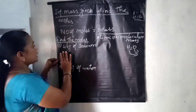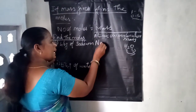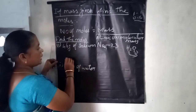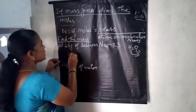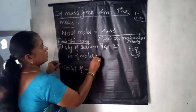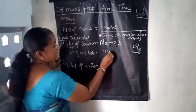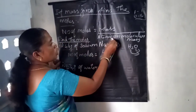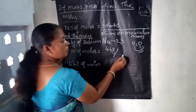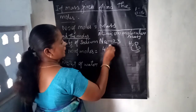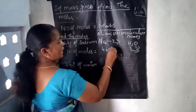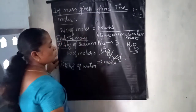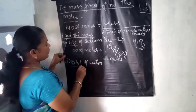First sum: find the moles for 46 grams of sodium. Sodium's symbol is Na, and its atomic mass is 23 grams. Number of moles = mass ÷ atomic mass = 46 g ÷ 23 g = 2 moles. Since sodium is an atom, use atomic mass, not molecular mass. The grams cancel, giving the answer: 2 moles.